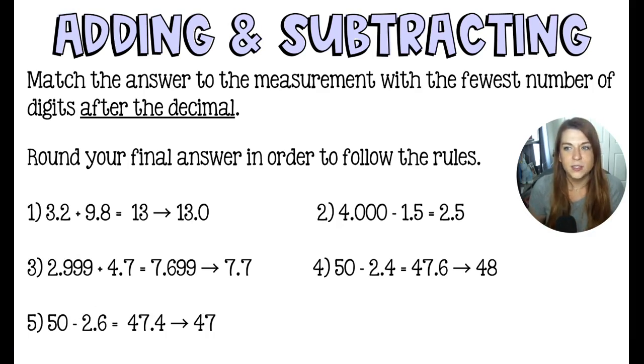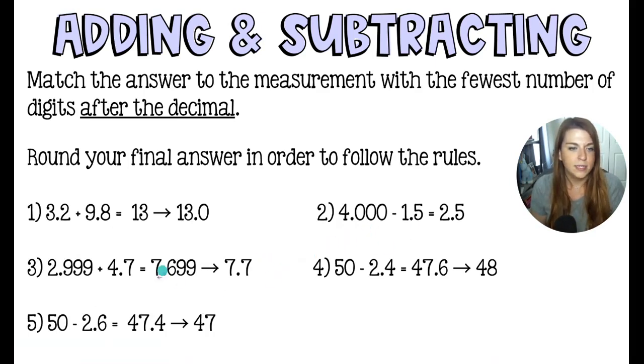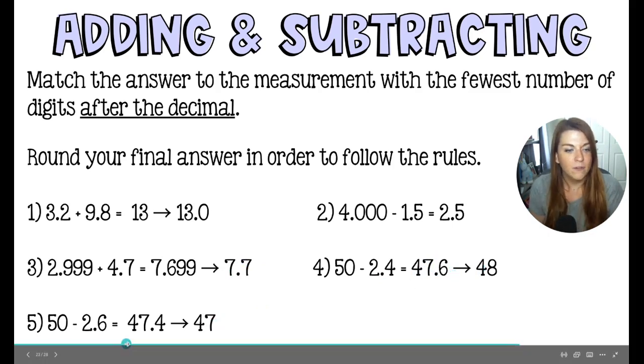So this is what you get in the calculator. They're going across now. So some of them indicate like number three, for example, the calculator will tell you it's 7.699. But in order to get just one number behind the decimal, we had to round. So that will become 7.7. In number four, we are getting 47.6, but to have no numbers behind the decimal, it rounds to 48. And in number five, we get 47.4, but to have no numbers behind the decimal, it rounds to 47.